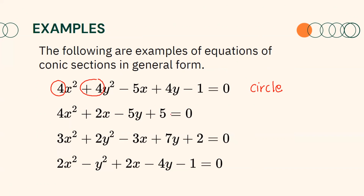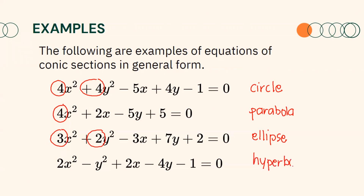The graph of the second equation is a parabola. Once again, let us take a look at the numerical coefficients of x² and y². The third equation represents an ellipse, and the numerical coefficients of x² and y² are positive 3 and positive 2. Finally, the fourth equation is a hyperbola. Notice that the numerical coefficient of x² is 2 and the numerical coefficient of y² is negative 1.